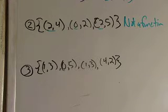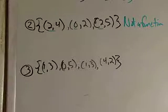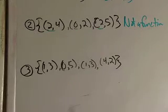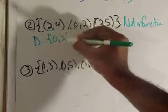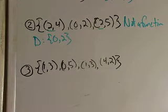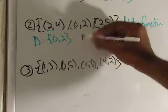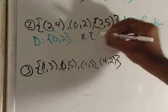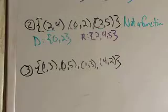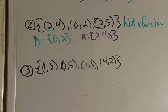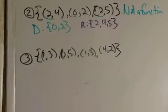Now how are you going to figure out your domain and your range? Well, I already highlighted the domain. So your domain is your x values: 0, 2. Your range is your y values: 2, 4, and 5. Now I just happen to put them in numerical order because it makes it easier to analyze.